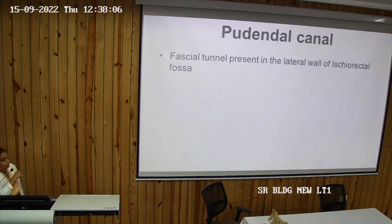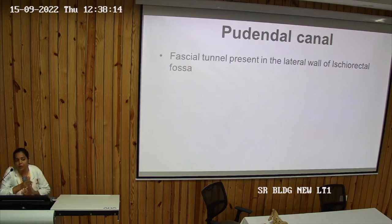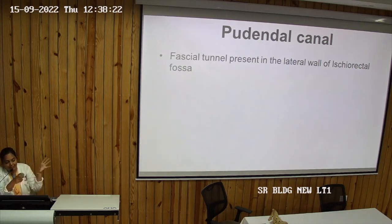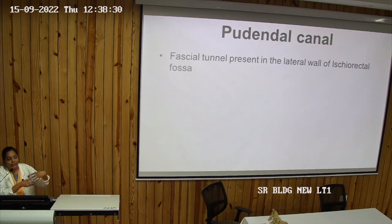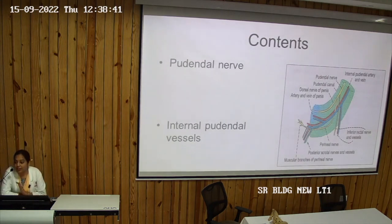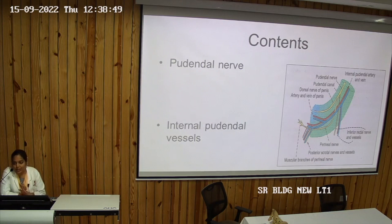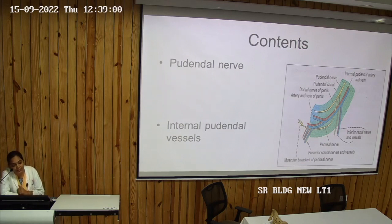Next is the pudendal canal. The pudendal canal is present in the lateral part of the ischiorectal fossa. It is surrounded by two fasciae: the obturator fascia and the fascia lunata in the ischiorectal fossa. It runs laterally in the ischiorectal fossa and is also known as Alcock's canal. The pudendal nerve and internal pudendal artery travel inside the pudendal canal. These structures leave the pelvis through the greater sciatic foramen, pass near the dorsal surface of the ischial spine, and re-enter through the lesser sciatic foramen into the pudendal canal.